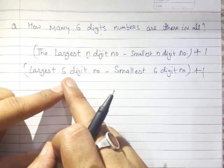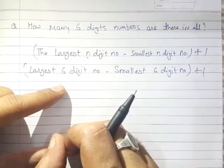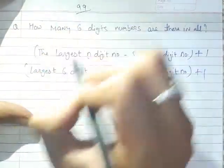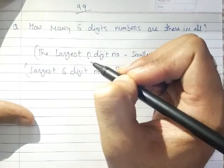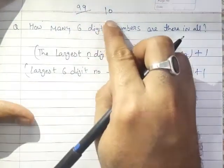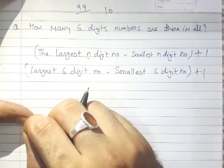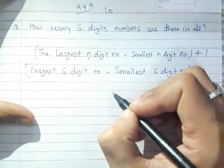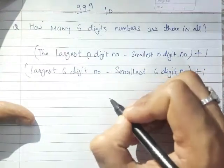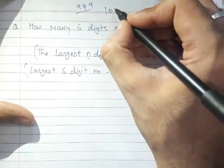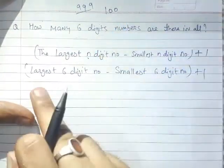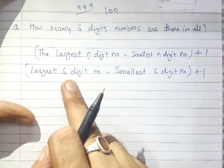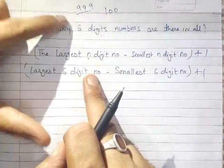For example, the largest two digit number is 99, and the smallest two digit number is 10. The largest three digit number is 999, and the smallest three digit number is 100. So the largest six digit number is 999999 (six nines), and the smallest six digit number is 100000 (one followed by five zeros).